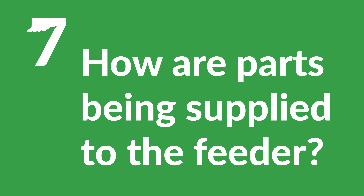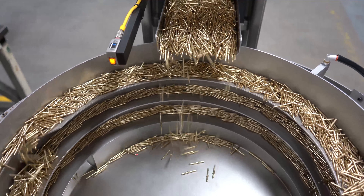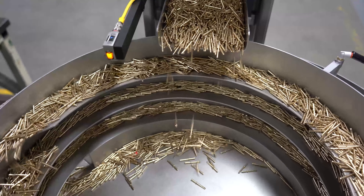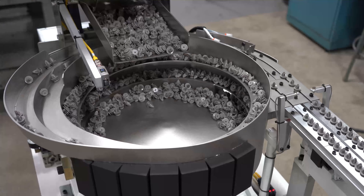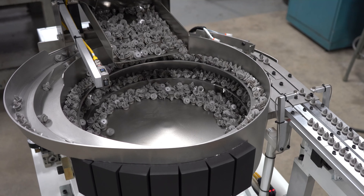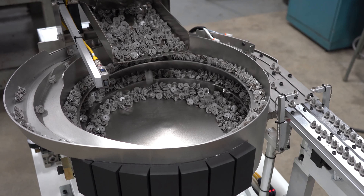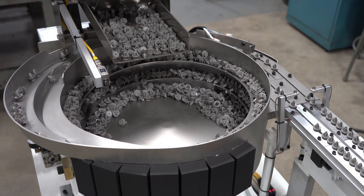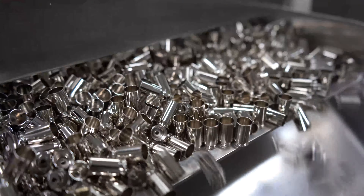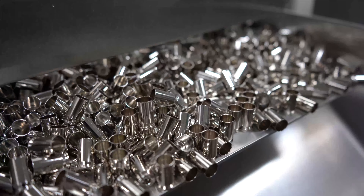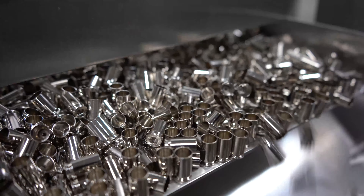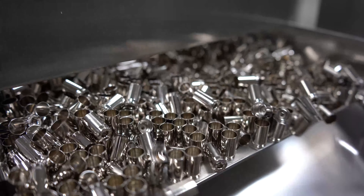Question 7: How are parts being supplied to the feeder? Vibratory feeder systems do not operate properly if they are too full of parts or starving for parts. Your system should be designed to meter part delivery to the feeder at a proper speed to reduce the number of operator touches and interactions. Your system should also be designed to ergonomic requirements and safety needs — for example, you do not want to place a hopper six feet off the ground when your operators are five feet tall.